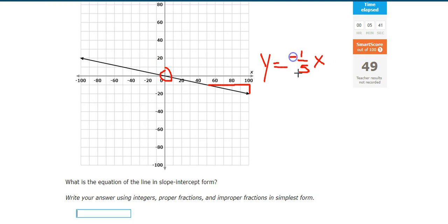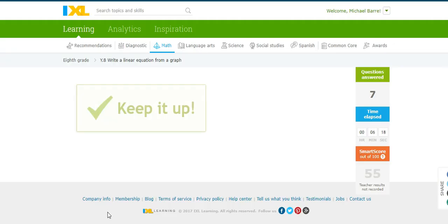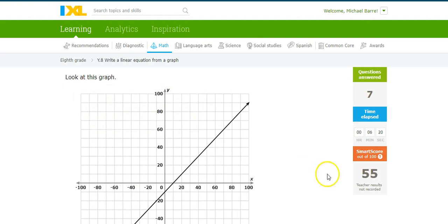Intercepts at 0. I can leave that off. And I'm going to add a negative because it's a negative slope. So y equals negative 1 fifth x. If that's going to accept it. It liked it. All right, I just got myself to 55. You're going to go higher than that, hopefully. Thanks for watching.